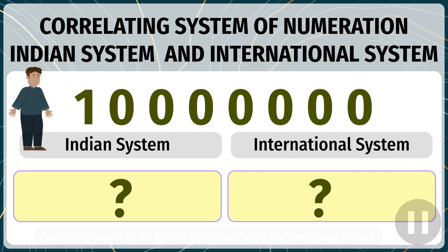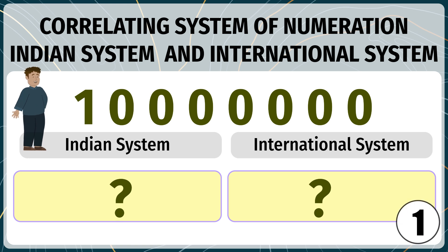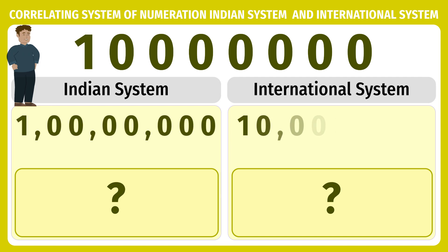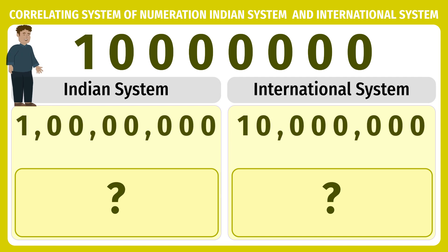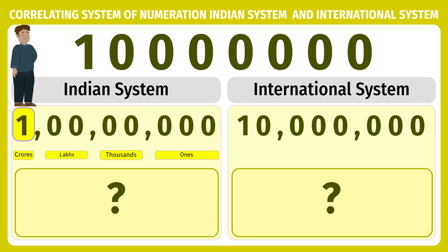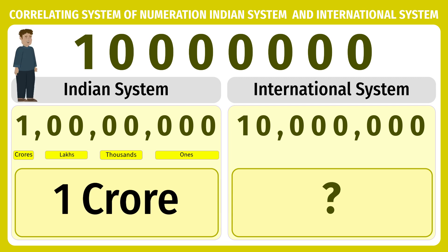One followed by seven zeros — how will you write it in the Indian system and international system? And what will be the number names? To write it according to the Indian system of numeration, we write it with commas in three-two-two fashion. The periods are ones, then thousands, then lakhs, and then crores. So the number we have here is one crore.